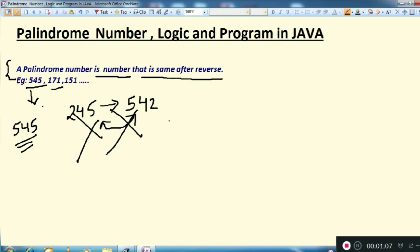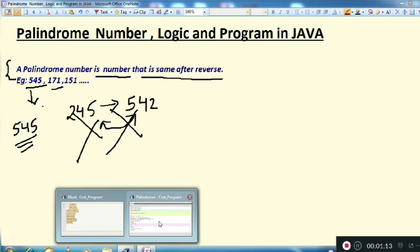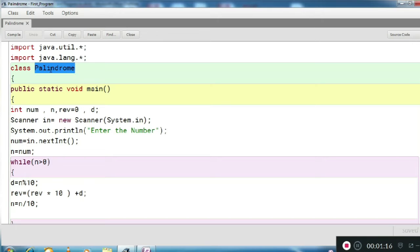So let's see the program in Java. Here I have created the program class palindrome and some integer variables because we want to have the reverse of the number. So I have taken one variable reverse and assigned it as 0.